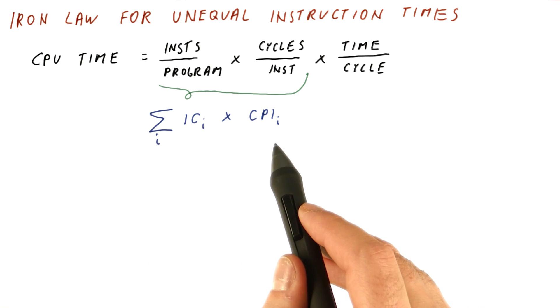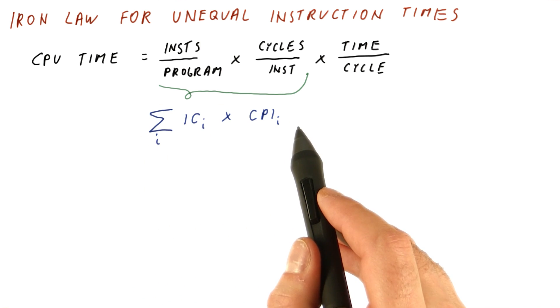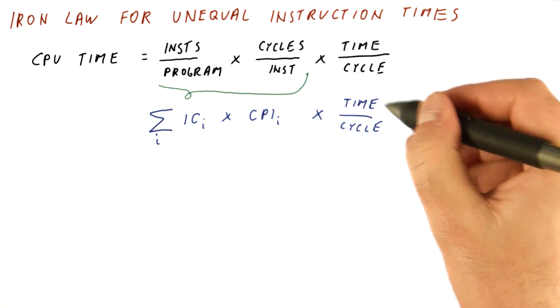And the sum here is simply summing up over all types of instructions. So this is still the number of cycles we execute in a program, and we still have the clock cycle time here.